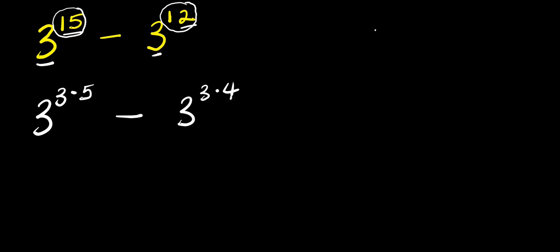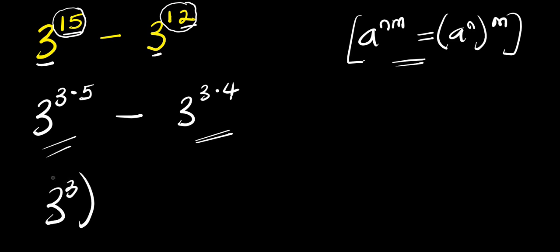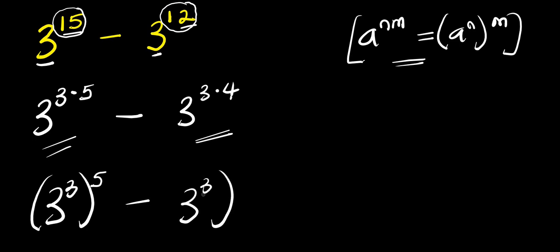Now if you have a power n times n, this equals a power n raised to the power of n. So applying this identity right here, what we are going to have is 3 to the power of 3 raised to the power of 5, minus 3 to the power of 3 raised to the power of 4.